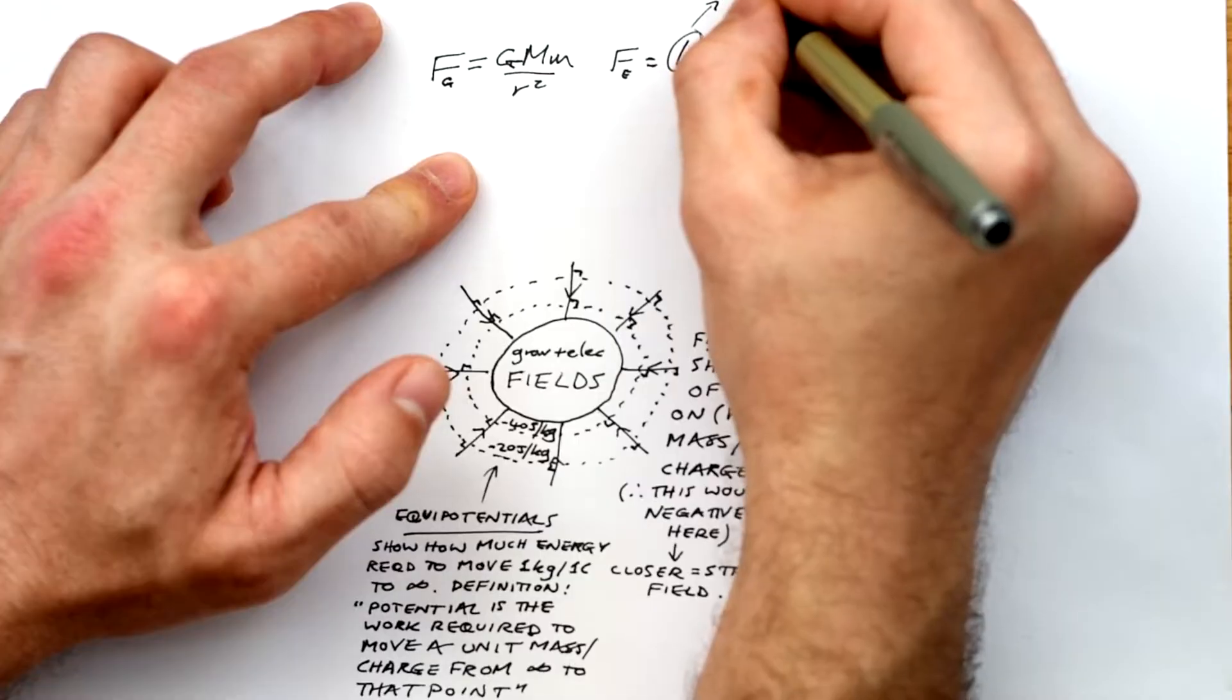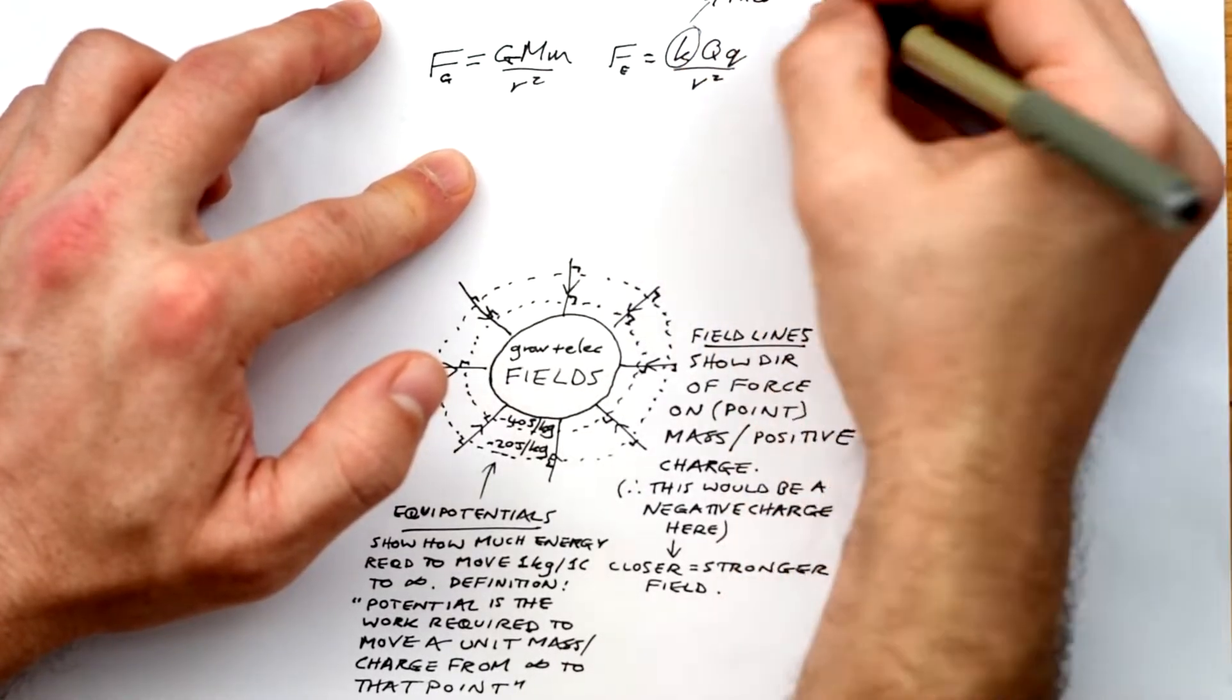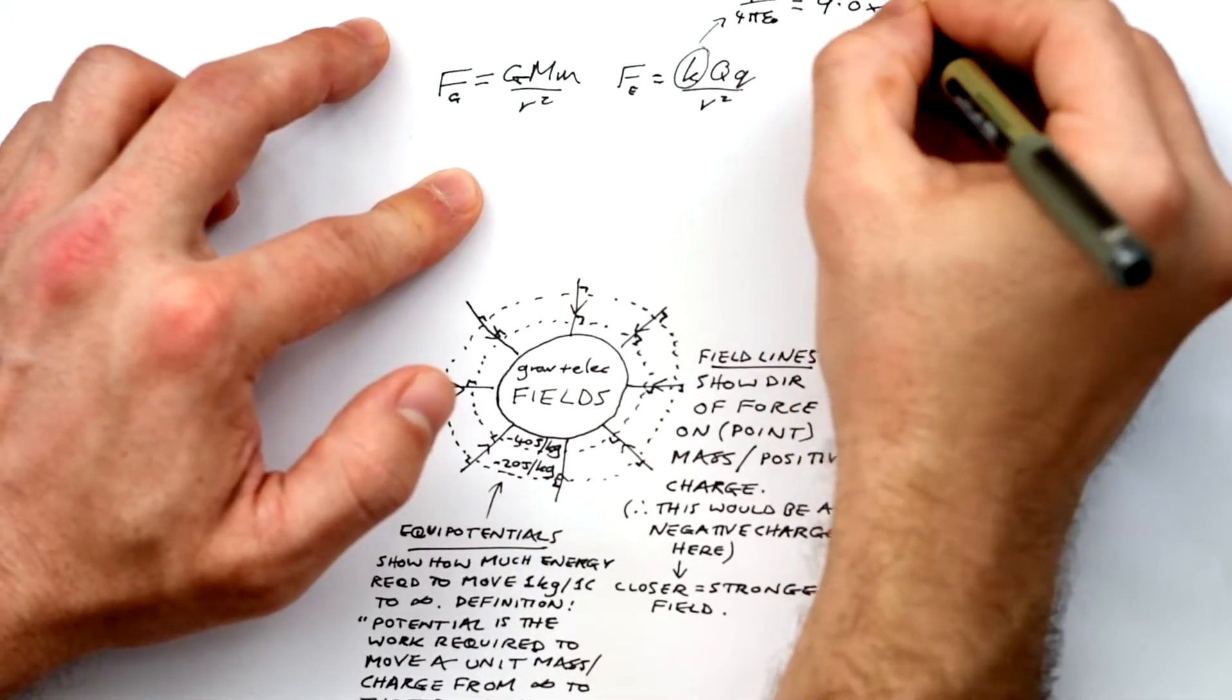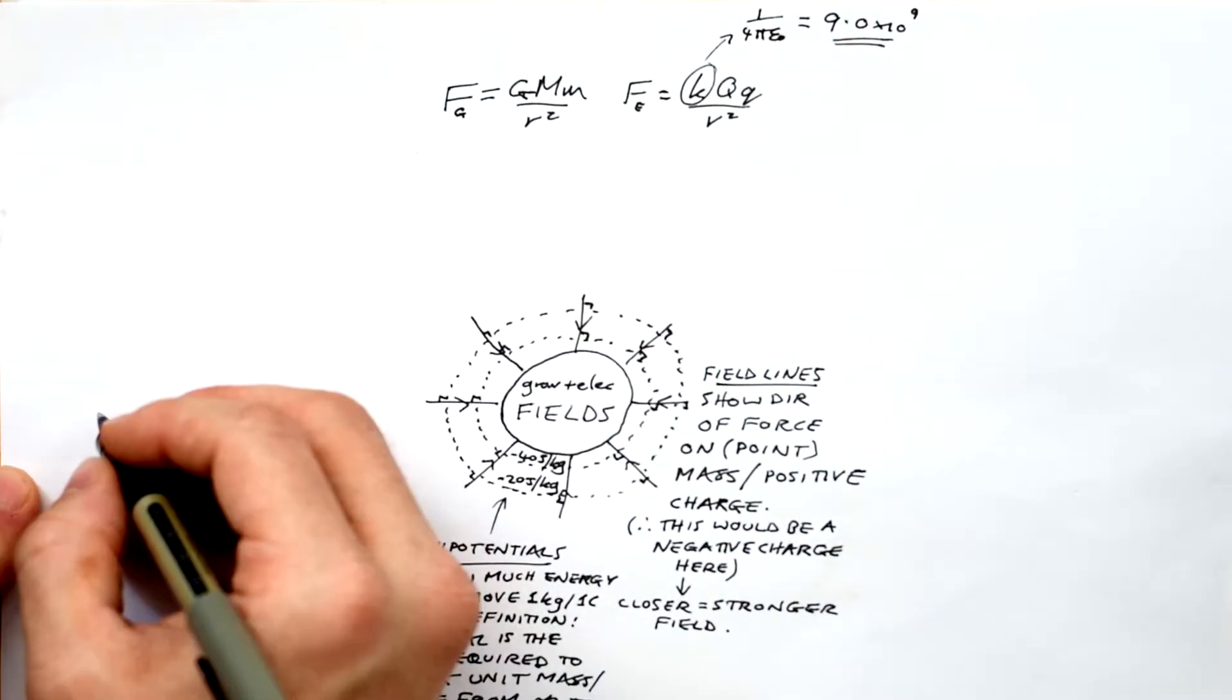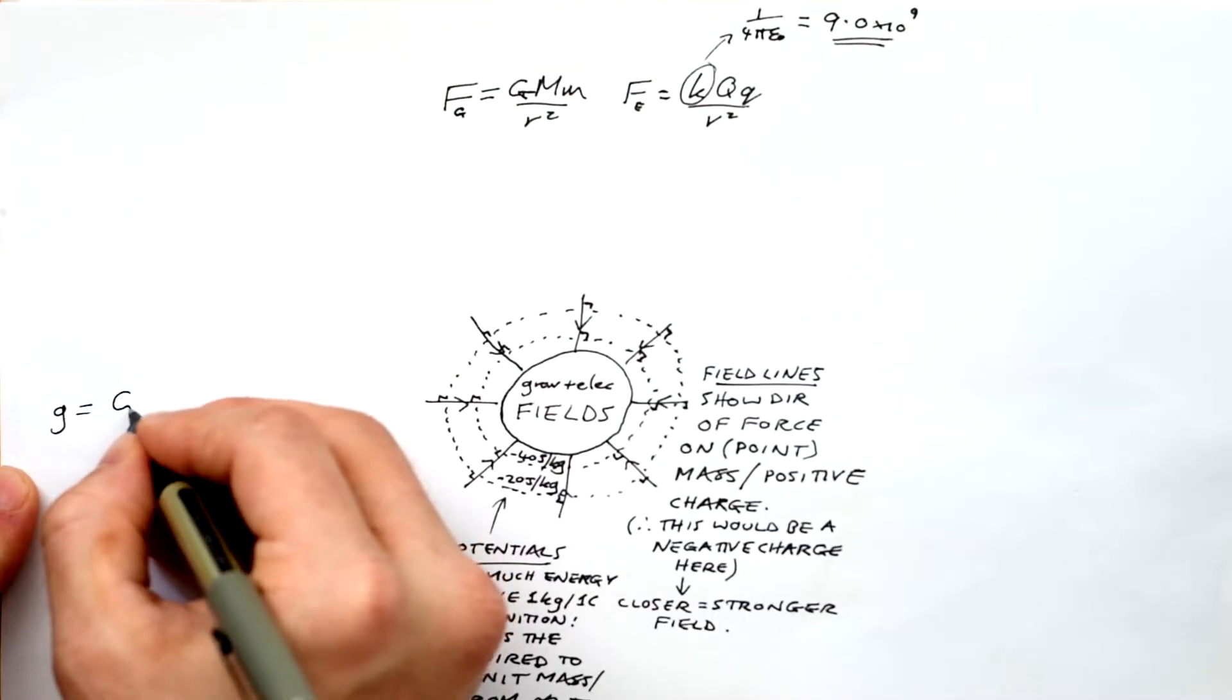Coulomb's law, electric force is equal to kQq over r squared. k is our shortcut constant, in reality is equal to one over four pi epsilon zero, epsilon zero being permittivity of free space. But this does give us a nice round number of 9.0 times 10 to the 9. So it's a very useful number to have in your head.